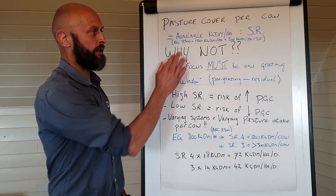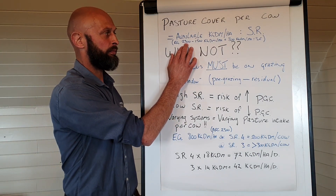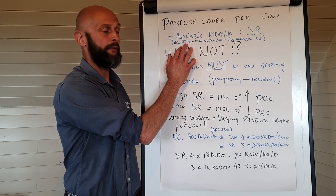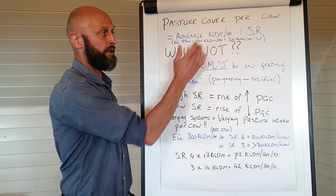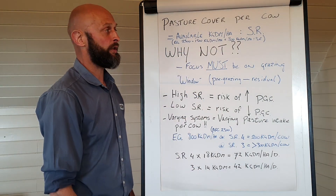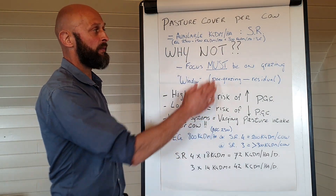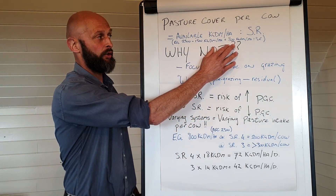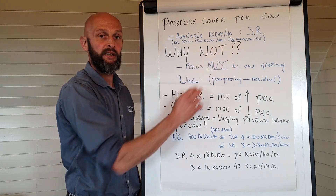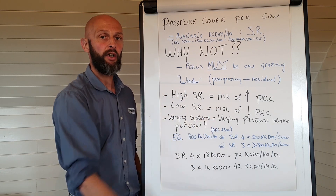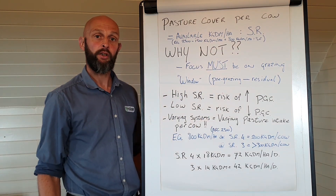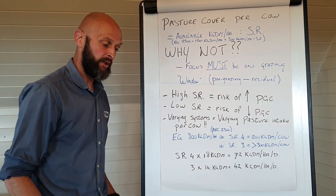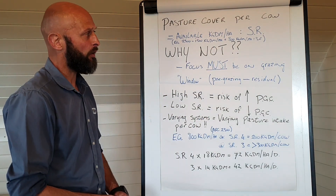For example, if you've got an average farm cover of 2300 minus 1500 residual, it's 800 kilos of dry matter per hectare divided by your stocking rate. That's your pasture cover per cow.